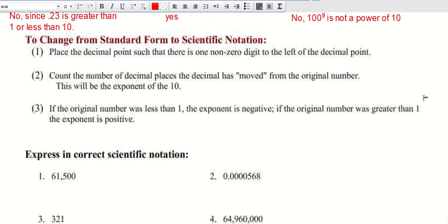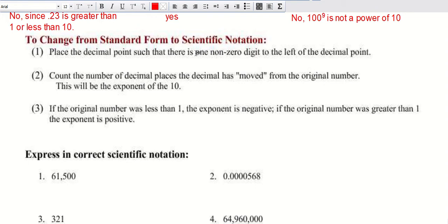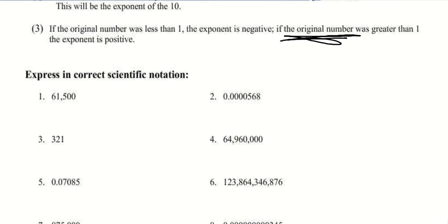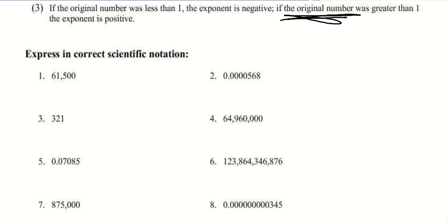So we want to change a number from standard to scientific notation. Remember that we're going to place the decimal point such that there is one non-zero digit to the left — meaning the number should be between 1 and 10. We're going to count the decimal places that it has moved. And then we're going to decide whether it needs a positive or negative exponent. We're going to use the original number to determine that: when we put it back from scientific notation into our original number, should we move it to the right or to the left?